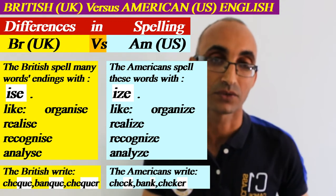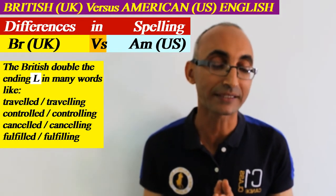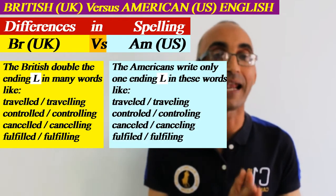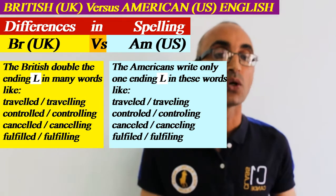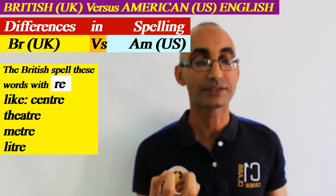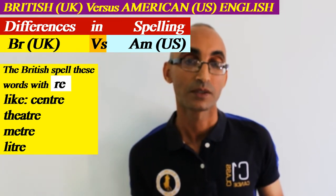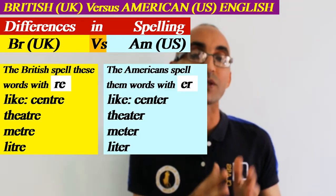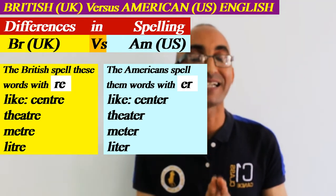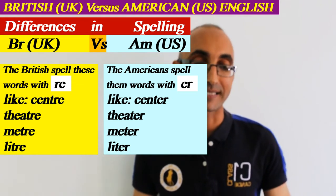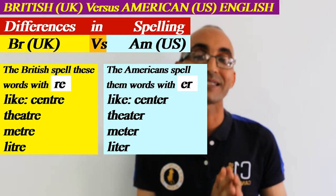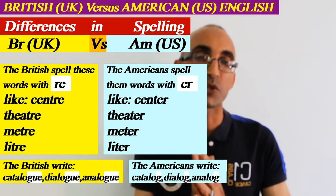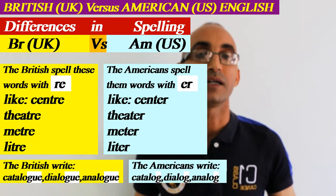When verbs have a final L, British English doubles it — for example, 'travelling', 'controlling', 'travelled' with double L — while Americans use only one L: 'traveling', 'controlled'. Also, words ending in '-tre' in British English — like 'centre', 'theatre', 'metre' — are spelled '-ter' in American English: 'center', 'theater', 'meter'. The British spelling is closer to French, which is why it stays closer to the original norms of older languages.